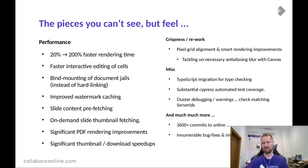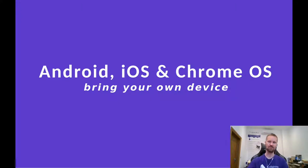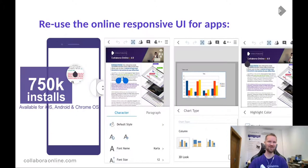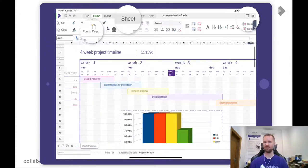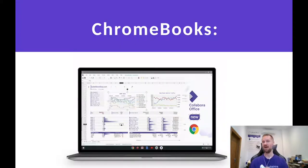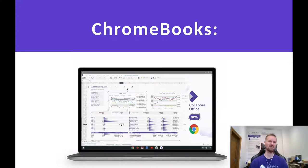We've had 3,500 commits in Collabora Online in the last year — innumerable bug fixes and improvements. We're also bringing this to your own devices: using the online responsive UI natively for apps so you can be disconnected from the internet and still have all that rich one-handed touch user interface. Improvements on iOS, and bringing that same Android app to Chromebooks, providing the whole rich user experience inside Chrome OS — often used in education — giving that full PC experience.